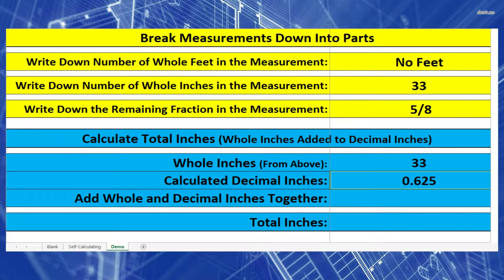Next, I need to add my whole inches to my decimal inches. So 33 plus 0.625 inches equals 33.625 inches. Great. One more step.